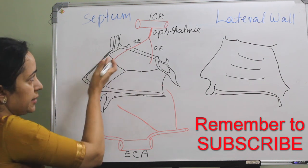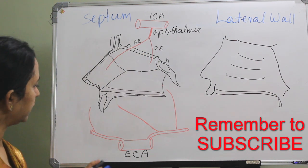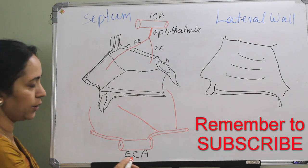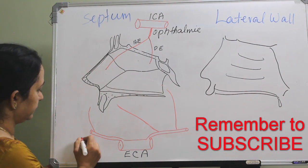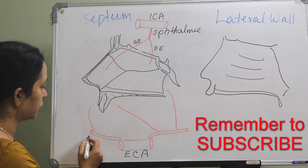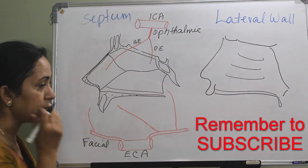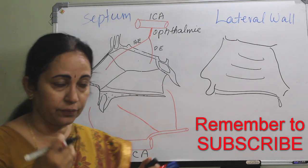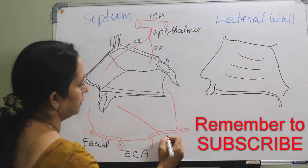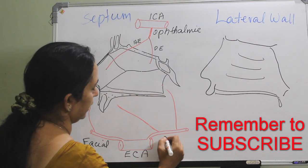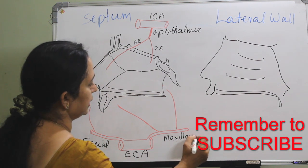So the ethmoid bone gives the anterior ethmoid and posterior ethmoid branches. The anterior ethmoid supplies the anterior part and the posterior ethmoid supplies posteriorly. And from the external carotid artery there is the facial artery and also the maxillary artery — the facial artery coming to the face and the maxillary artery to the maxilla. Both are branches of the external carotid.